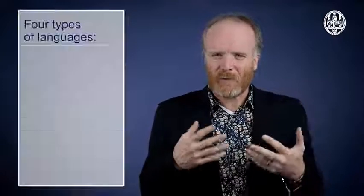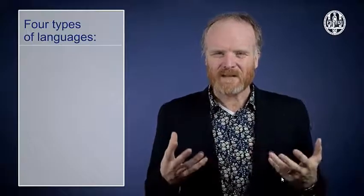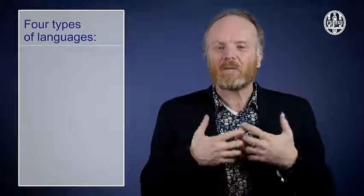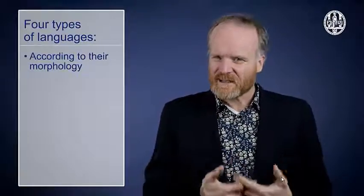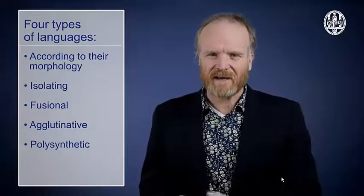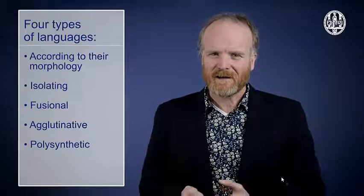In summary, we have seen that we can distinguish four types of languages. And we can do this according to their morphology, the way in which they treat morphemes. And this gives us isolating, fusional, agglutinative and polysynthetic languages. We are going to see much more of this in the next video. Thank you very much.